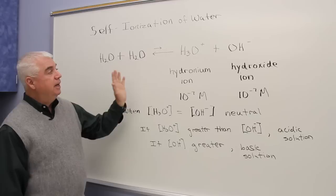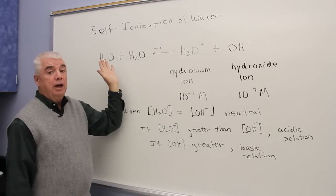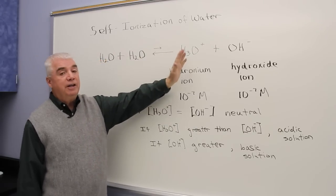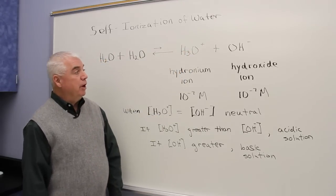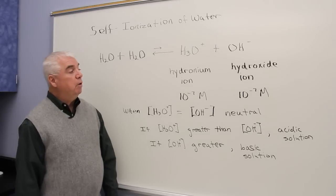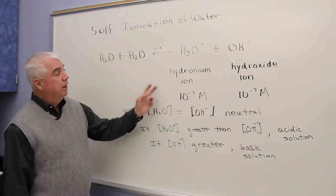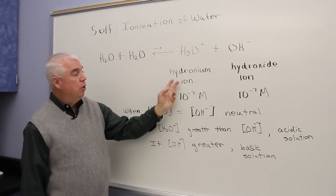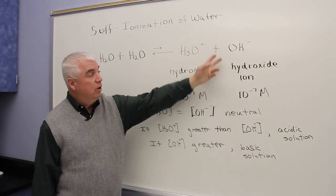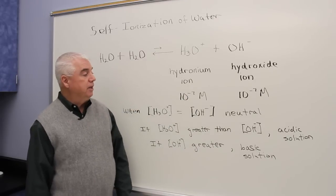And admittedly, the position of equilibrium lies far to the left. We don't get very much H3O+ and OH-, but what we do get is significant. H3O+ is called a hydronium ion, OH- the hydroxide ion.